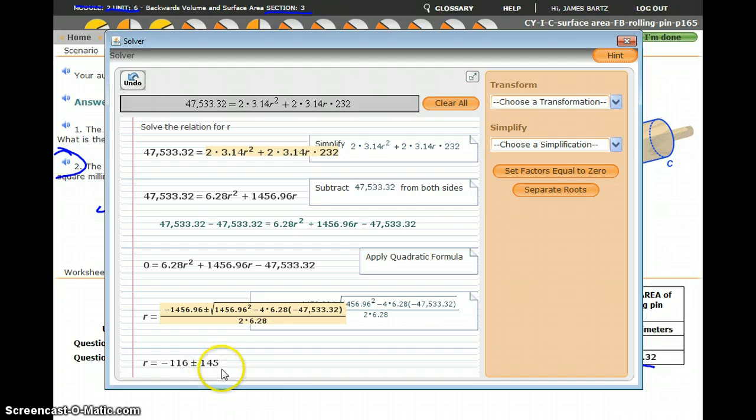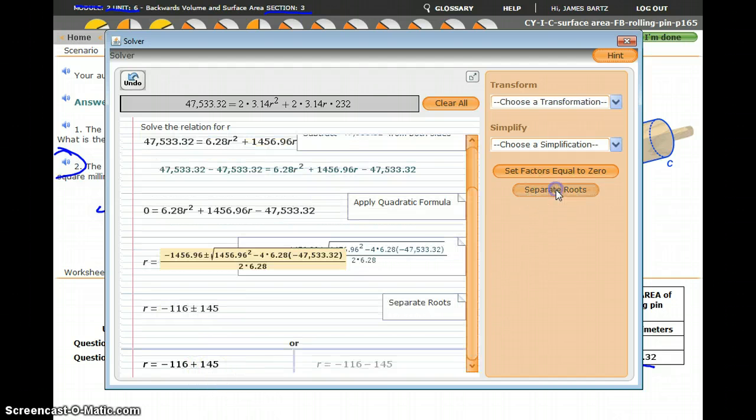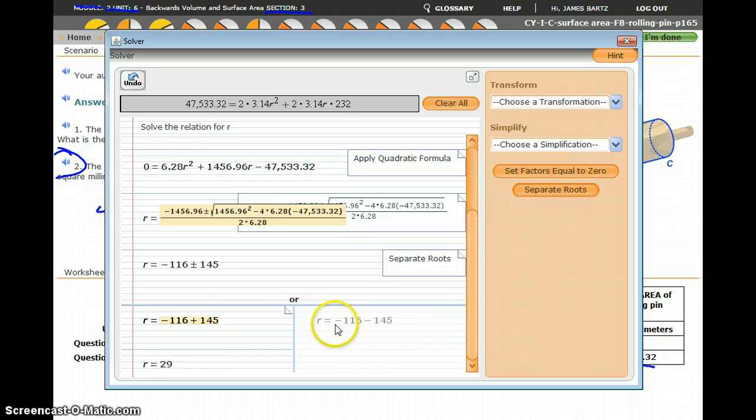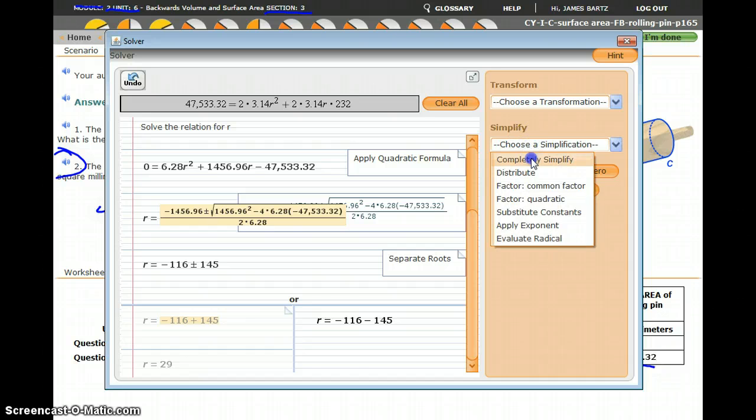So to find the two answers for r, I'm going to press separate the roots, and so it splits this up into negative 116 plus 145, which if I completely simplify I get 29, and clicking on the second root, if I completely simplify I get negative 261.